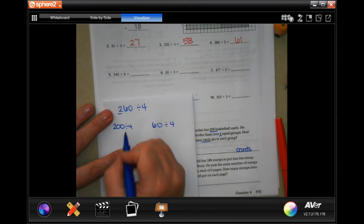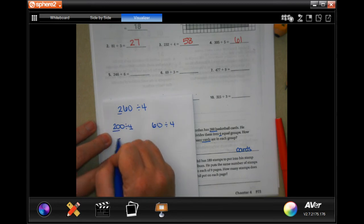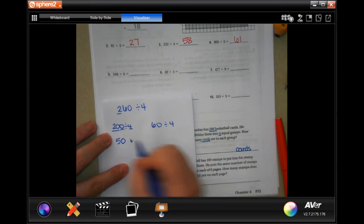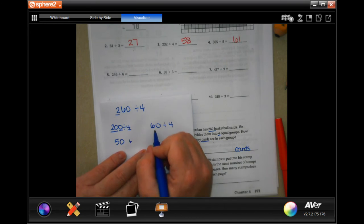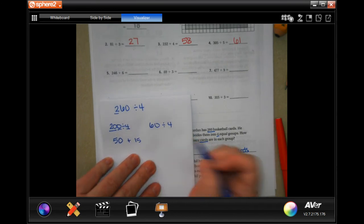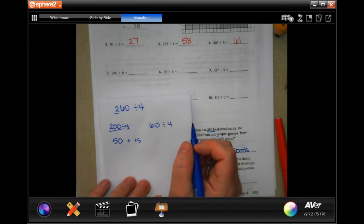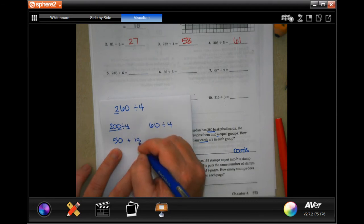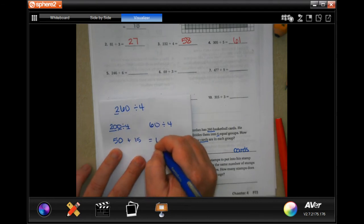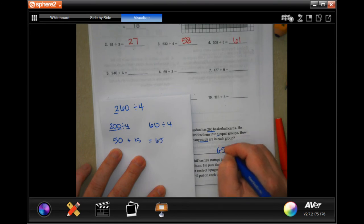So I know that four will go into 200, and I know it'll go into 60. So four goes into 20, five times, tack that zero on, and four goes into 60, 15 times. So now 50 plus 15 is 65, so 65 cards. Write down your work, guys.